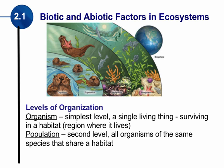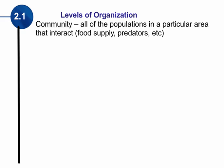A population is multiple organisms of the same species that share a habitat — and that's the important point: same species. They're all sea otters. Now within a habitat there are many different types of organisms and many different types of populations. When we combine our populations together and look at all of them, now we're looking at a community.